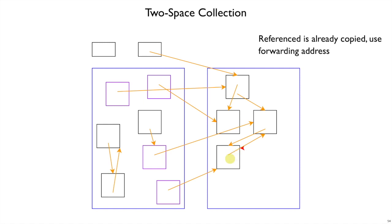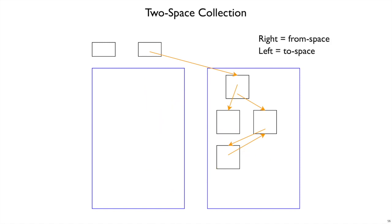At this point we're done with that object and done traversing our set of copied objects — we're out of gray objects, so the garbage collection is complete. We finish by ignoring from-space from now on. Conceptually we clear it, but really we can just ignore it, and all those arrows go away. We keep allocating in to-space, keep interpreting, and eventually when we run out of space we'll perform a collection that copies objects back over to the other half.